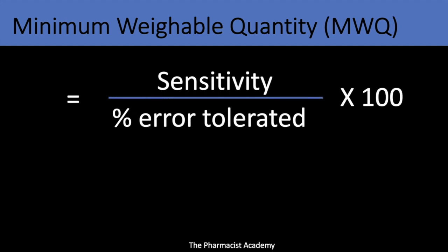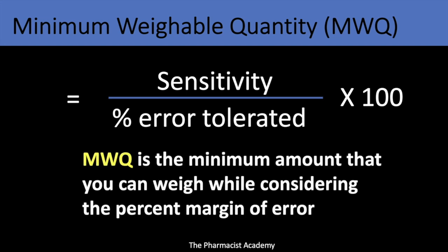Here's the formula in case you ever need to calculate the minimum weighable quantity, but on the New York State pharmacy compounding exam they do give you the minimum weighable quantity — that's what you need in order to calculate your aliquot. The MWQ is similar to the sensitivity but it takes into account the percent error tolerated, and this will automatically increase the lowest amount that the balance can weigh because we are allowing a certain amount of error.